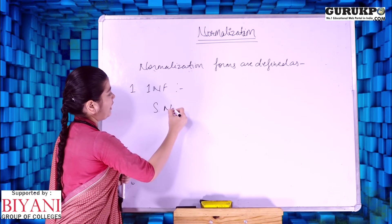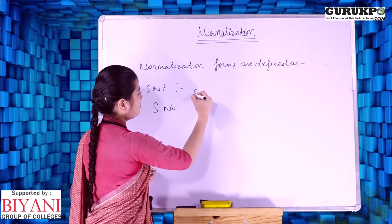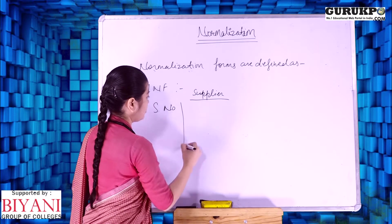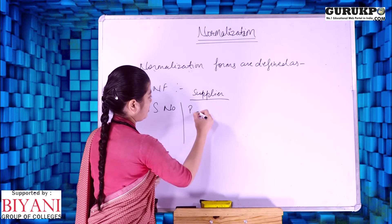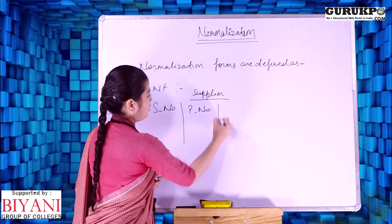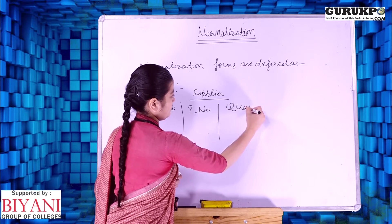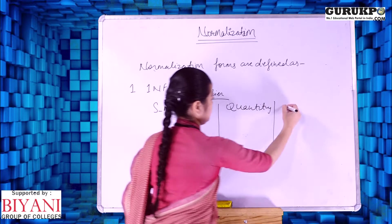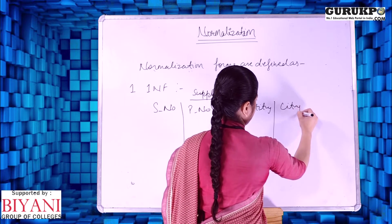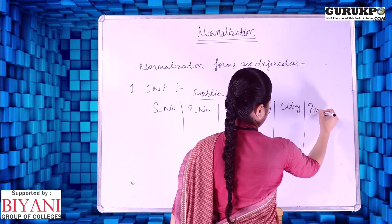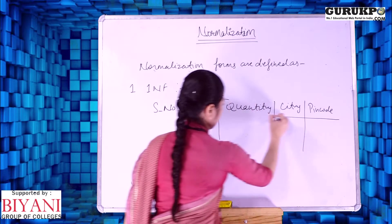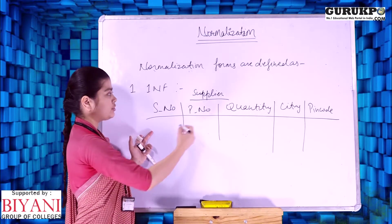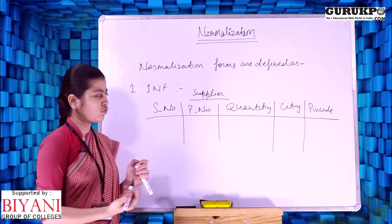Let's take an example. Suppose we have a supplier table with five columns.